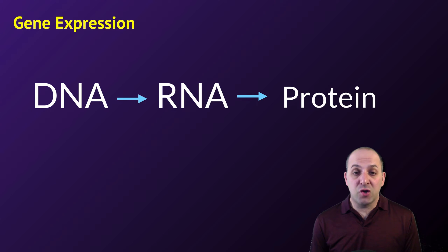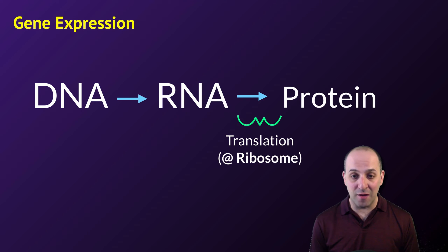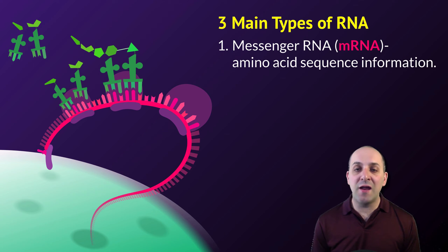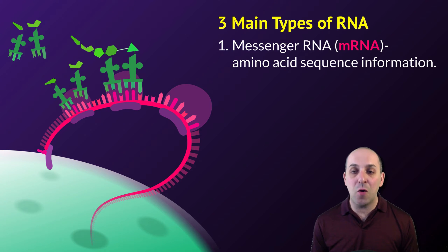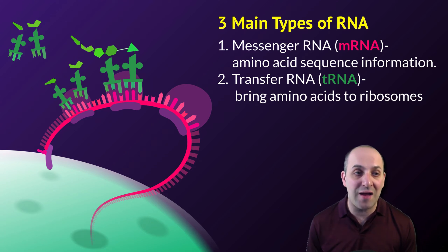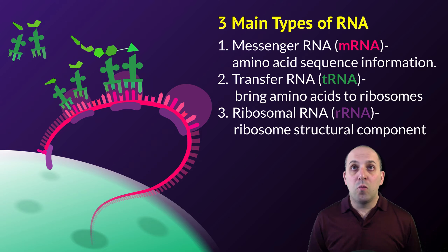Looking specifically at gene expression, this video is going to deal with the second arrow in the process, which is known as translation. Translation happens at the ribosome in cells, and it's going to involve the three major types of RNA. Messenger RNA is the RNA that actually contains the amino acid sequence information. Transfer RNA are RNA molecules that are going to bring specific amino acids to the ribosome, and the ribosome itself is a complex of some proteins and ribosomal RNA, which is the actual structural building blocks of the ribosome.